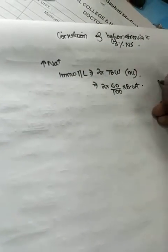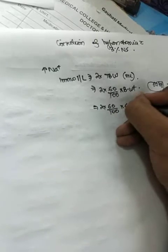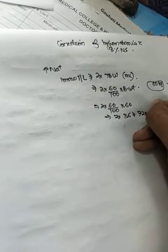This is as per the recommendation given in the Oxford Handbook of Anesthesia. So for a 60 kg patient, what you require is 2 into 60 by 100 into 60, that is 2 into 36, which equals 72 ml.